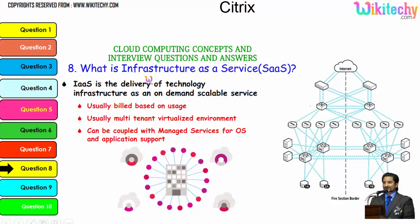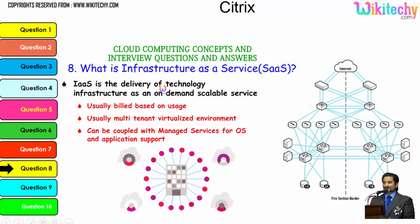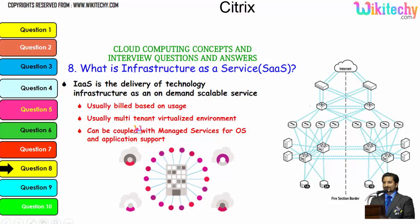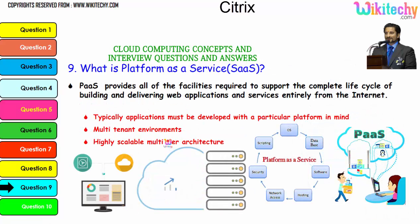Now let's talk about Infrastructure as a Service. You'll be allocated with your server, and whatever OS you want you can put it, and whatever software you want you can put it. IaaS is the delivery of technology infrastructure as an on-demand deliverable service — scalable, usually built based on usage, multi-tenant, virtualized, and can be coupled with managed services for OS and application support.